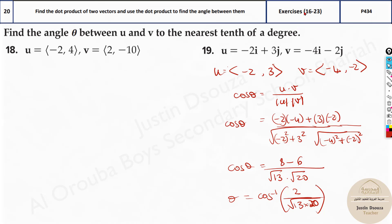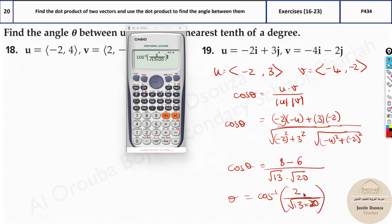We'll just do it in the calculator. I've just substituted cos inverse 2 by square root 13 multiplied by 20. You can write it separately like this, square root 13 multiplied by square root 20. It's going to be the same. And it's 82.87. It's 82.9 degrees.